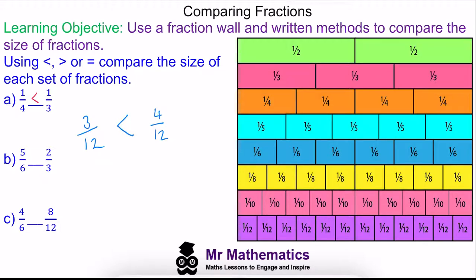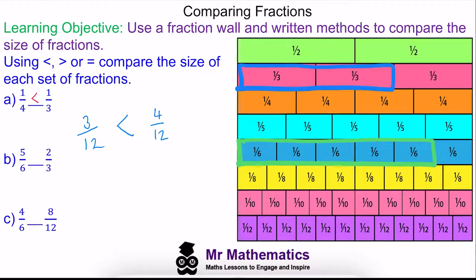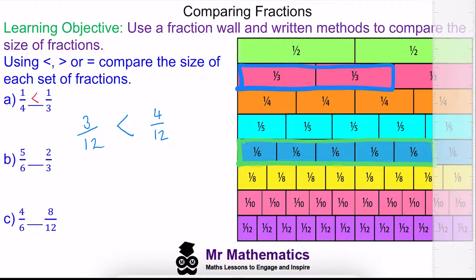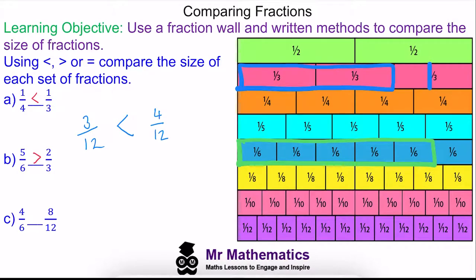For question B, we have five sixths highlighted in green compared to two thirds in blue, and you can see that five sixths is bigger than two thirds. Using the written method with a common denominator of six, two thirds multiplied by two gives four over six, and again you can see that five sixths is bigger.